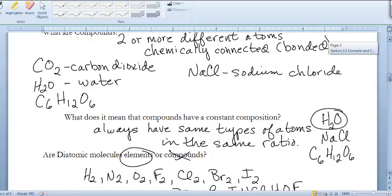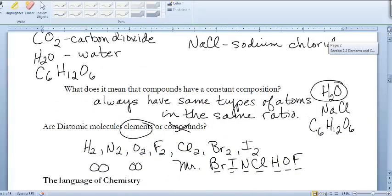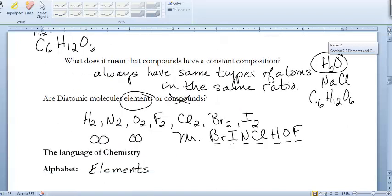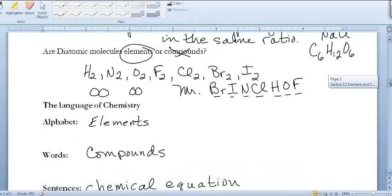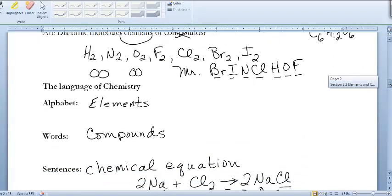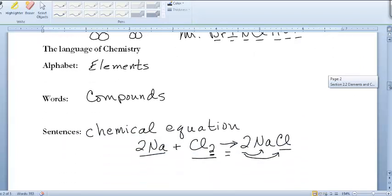Atoms are similar to the letters in the alphabet in that elements can come together and make up compounds. We looked at diatomic molecules, which are elements, and identified the seven diatomic elements on the periodic table.